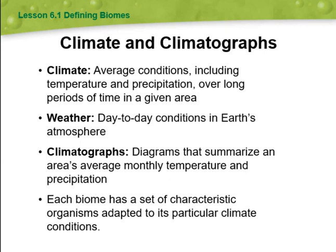We are going to be talking about climate and climatographs. Climate refers to average conditions — including temperature and precipitation — over long periods of time in a given area. Weather is the day-to-day conditions in Earth's atmosphere. Climatographs are diagrams that summarize an area's average monthly temperature and precipitation.